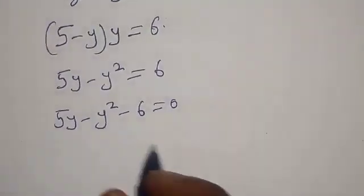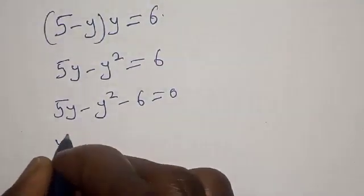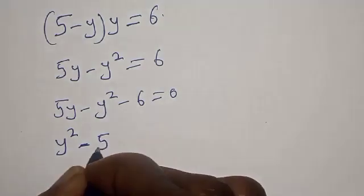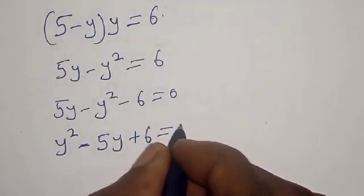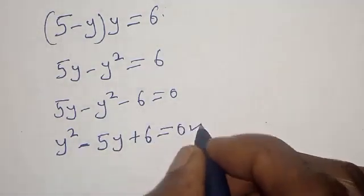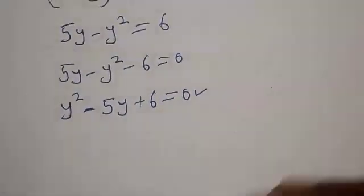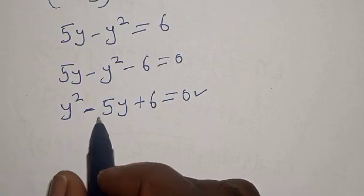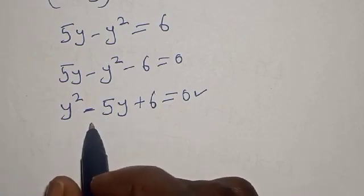Now let's open this bracket. We have 5y minus y squared minus 6 is equal to 0. Then y squared minus 5y plus 6 is equal to 0. This is a quadratic equation, which can be solved by using either the quadratic general formula or factorization method.